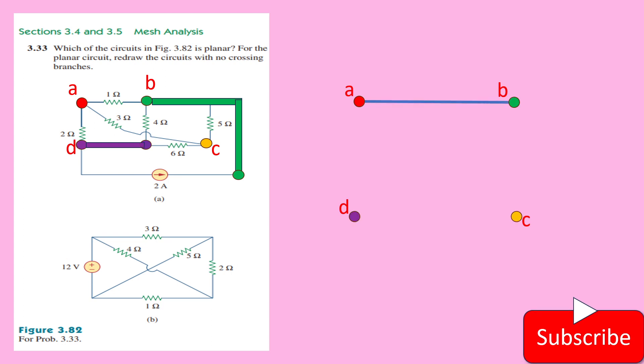In between this A and B, we have this 1 ohm resistor placed. You refer the circuit given in the problem. And between B and C, we have this 5 ohm resistor placed. And between this A and C, we have the 3 ohm resistor available. And between A and D, we have this 2 ohm resistor placed. And between this D and C, we have this 6 ohm resistor.